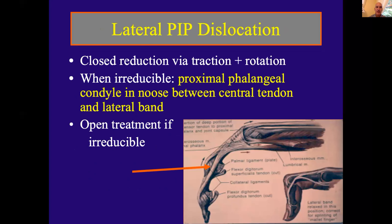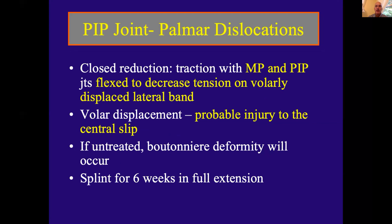For lateral PIP dislocations, the closed reduction trick is traction and rotation — you're trying to prevent the proximal phalanx head from getting stuck in the noose between the central slip and the lateral band, which makes it irreducible and requires surgery. For palmar PIP dislocations, two things to remember: the closed reduction maneuver requires traction with MP and PIP joints flexed to decrease tension on the volarly displaced lateral band. And you must assume a central slip rupture occurred. If missed, you'll get a boutonnière deformity. These require six weeks of full extension of the PIP joint.